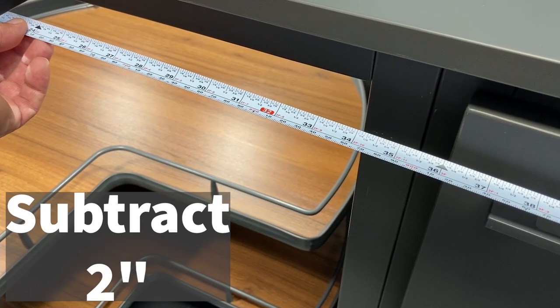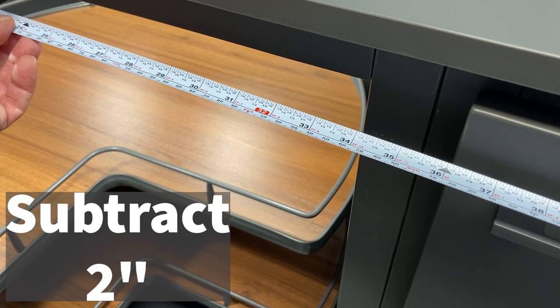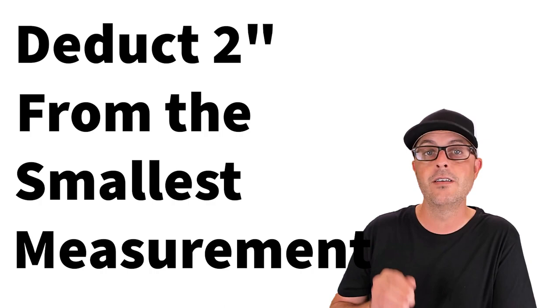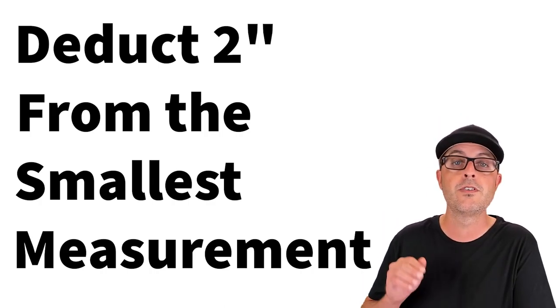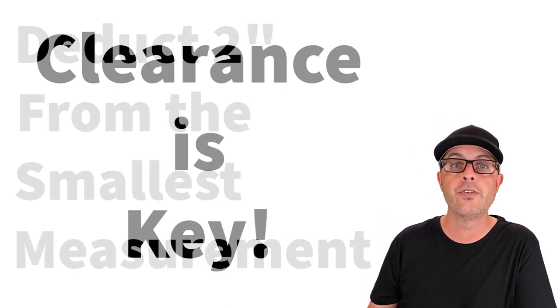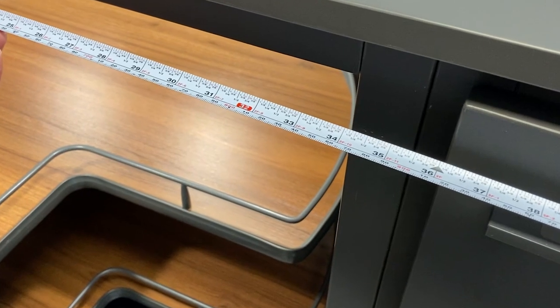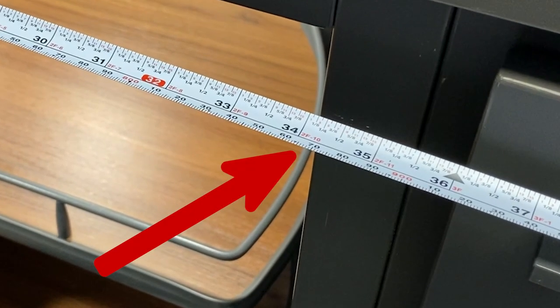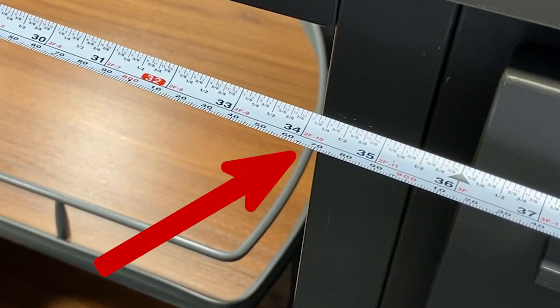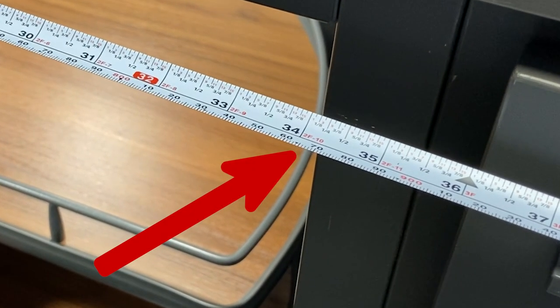If they are, just subtract approximately two inches from this measurement that will be the maximum size Lazy Susan for your cabinet. If the measurements are not the same, simply deduct approximately two inches from the smaller measurement of the two. This will ensure that your Lazy Susan will have enough clearance once installed. As you see here our measurements are around 34 inches therefore we can install at max a 32 inch Lazy Susan.